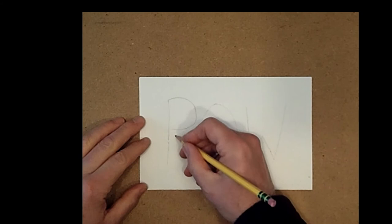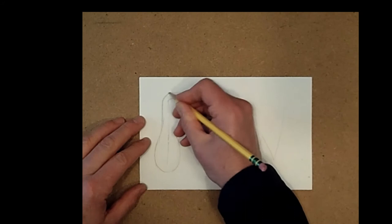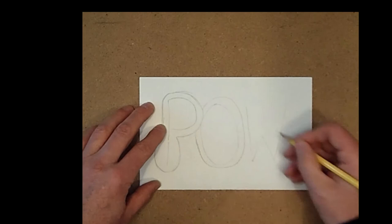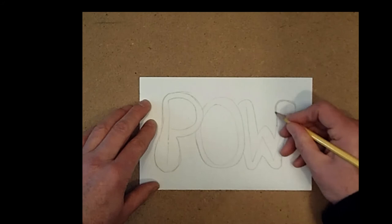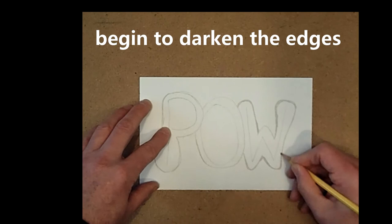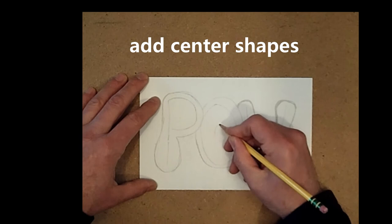Now, it's time to start thinking about this as a shape instead of a group of letters. So, I'm going to start going around my letters to create bubble letters.